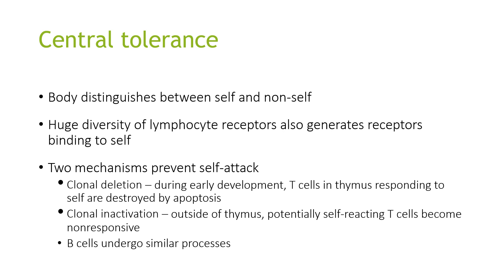The body distinguishes between self and non-self. The huge diversity of lymphocyte receptors also generates receptors that can bind to self, so two mechanisms prevent self-attack. The first is clonal deletion: during early development, T cells in the thymus that respond to self are destroyed by apoptosis — programmed cell death. The second is clonal inactivation, which occurs outside the thymus, where potentially self-reacting T cells become non-responsive.